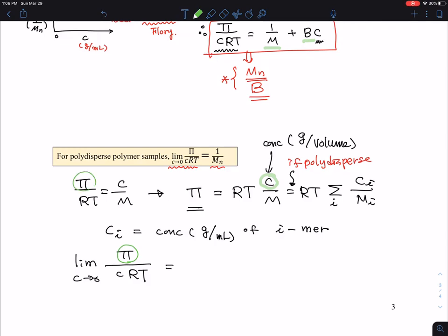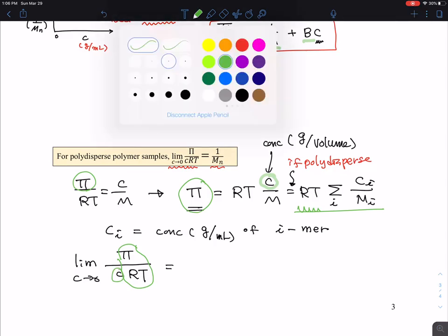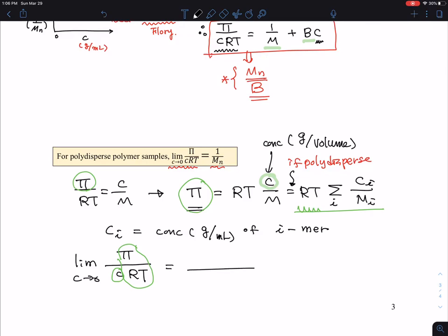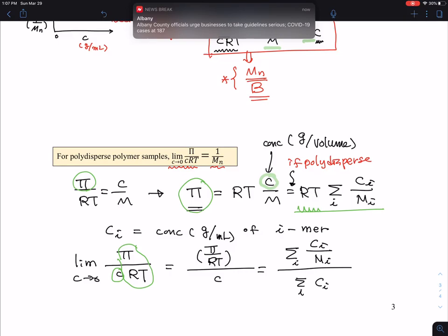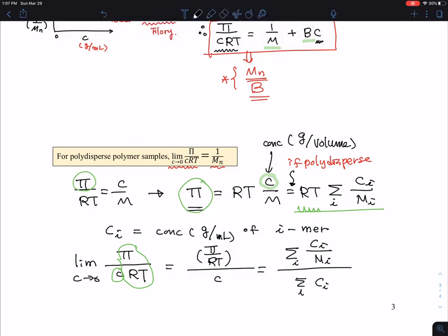π is here, so π for polydisperse samples - I want to lump π/RT into this term, and then there is 1/C. Therefore I can write it as π/RT divided by C. As the equation above shows, it's Ci/Mi in the numerator and the bottom is just a combination of all different mass contributions from different mers.